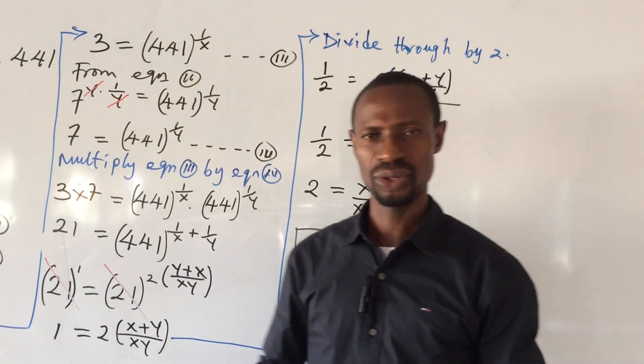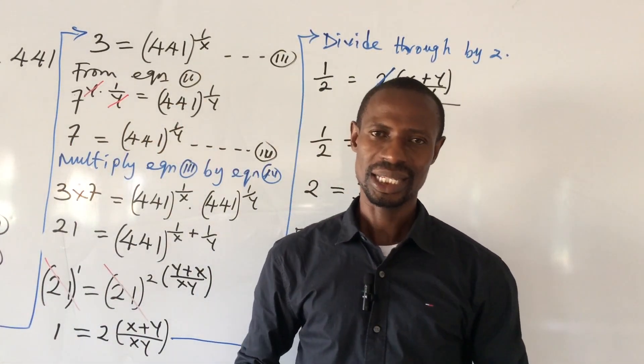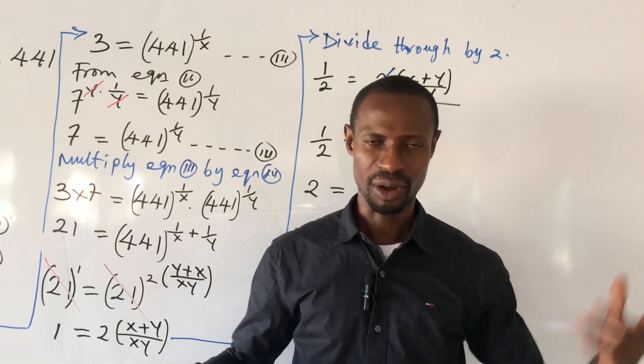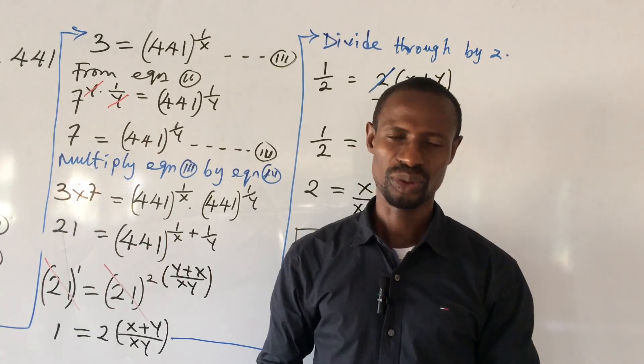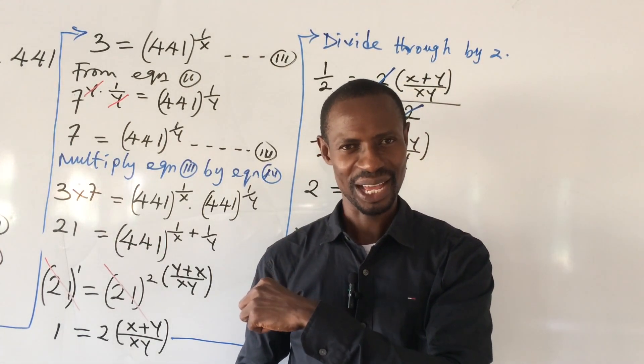Now like I told you in the previous video, I got the answer 2. Your xy all over x plus y is equal to 2. But the procedure is not in order.